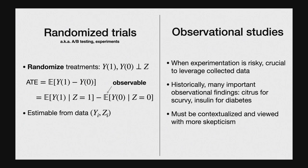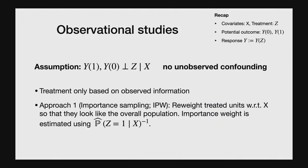Historically, a lot of important findings have been made on observational data alone. For example, citrus fruit was found to be a cure for scurvy in the 1700s, and insulin was found to be an effective treatment for diabetes in the 1920s, long before anyone started thinking about randomized trials. But these observational results need to be contextualized and viewed with more skepticism, lest we fall into the trap of spurious conclusions.